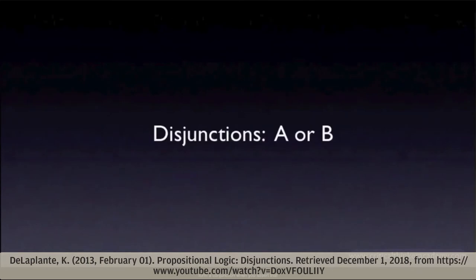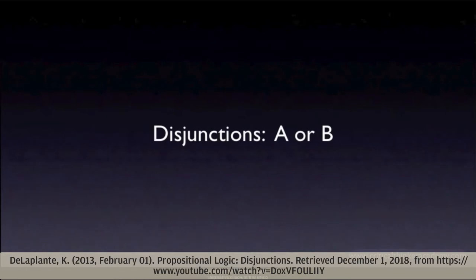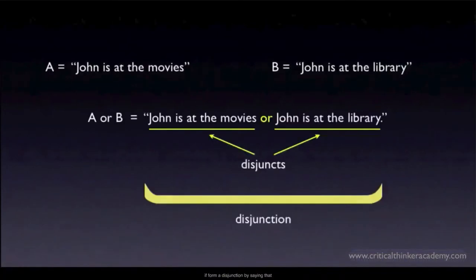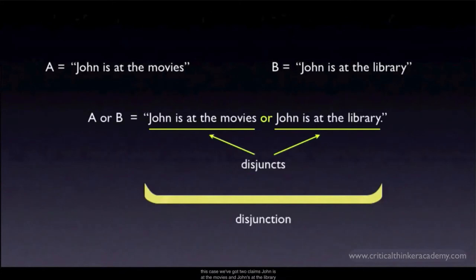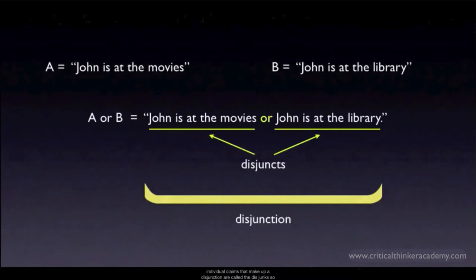You form a conjunction when you assert that two or more claims are all true at the same time. You form a disjunction when you assert that at least one of a set of claims is true. We'll look at the logic of disjunctive claims in this video. You form a disjunction by saying that either one of a set of claims is true. In this case we've got two claims: 'John is at the movies' and 'John is at the library.' The disjunction asserts that one of these is true — John is either at the movies or he's at the library. The individual claims that make up a disjunction are called the disjuncts. So A and B are the disjuncts, and the disjunction is the whole claim A or B.